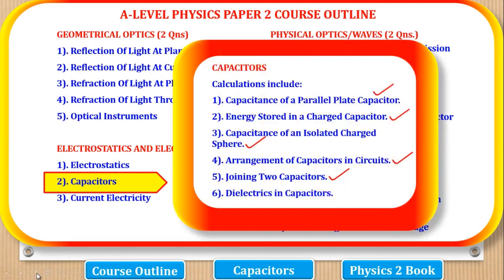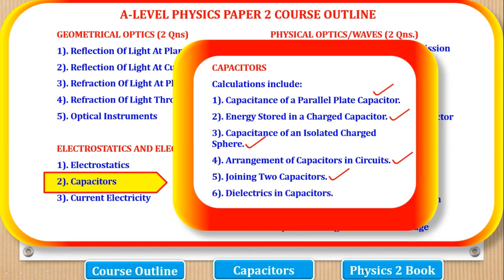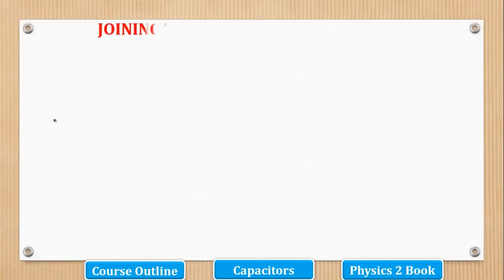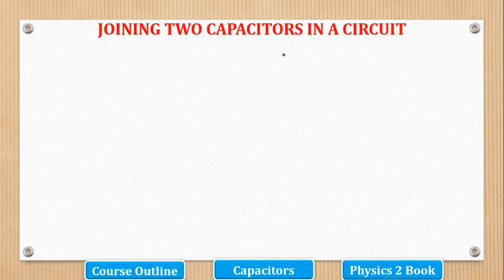In previous videos, we have already covered the 4 parts of the course outline. In this video, we are going to cover the 5th part of the calculations, which is joining two capacitors. If you need complete notes, they are available in the book called Mastering A Level Physics Paper 2, which contains notes, worked examples, and trial questions for all parts. On this YouTube channel, we shall focus on the worked examples from that book. So now we shall start our topic: joining two capacitors in a circuit.